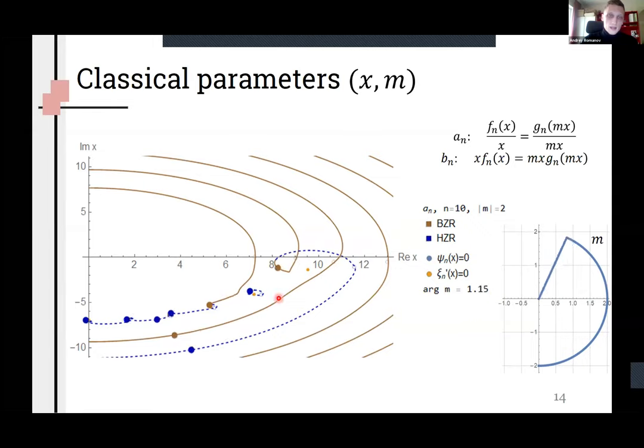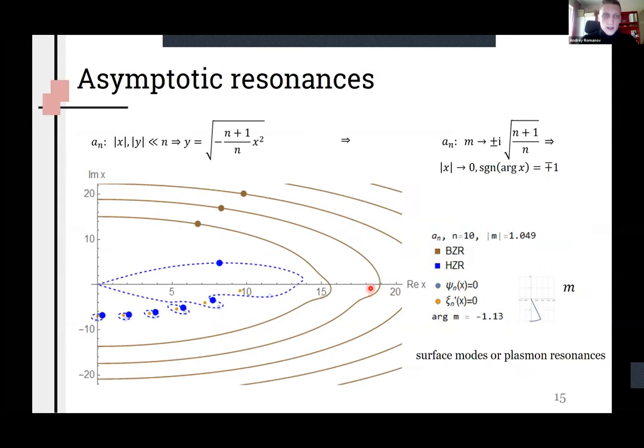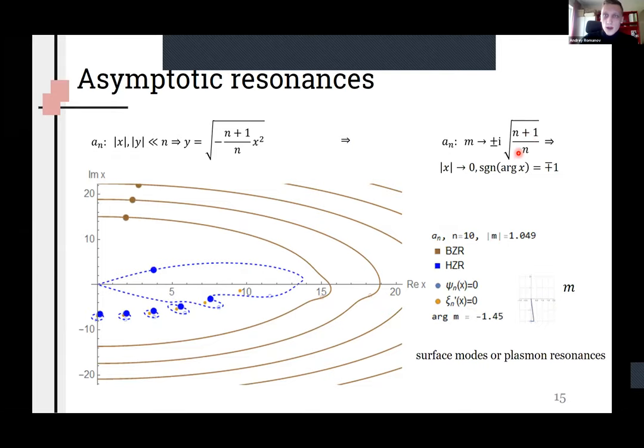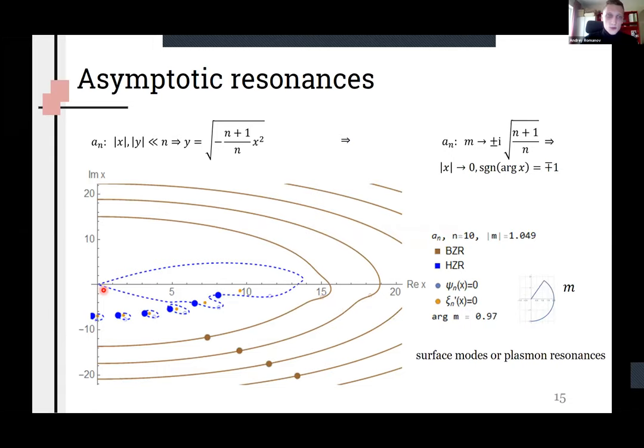Also resonances can push each other and change their classes. In this case asymptotic solutions observed with a specific m value. In the case when m tends to this value, one trajectory with two resonances tends to zero.